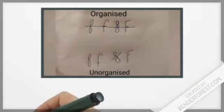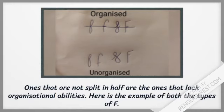Ones that are not split in half are the ones that lack organizational abilities. Here is the example of both types of F.